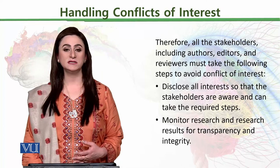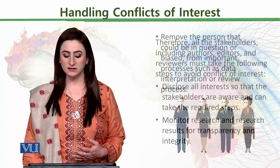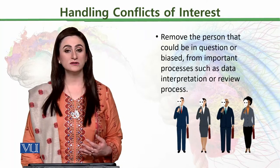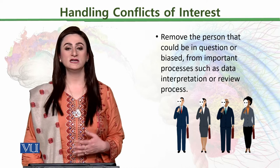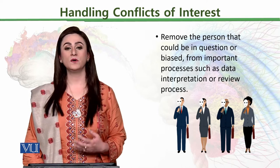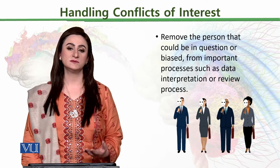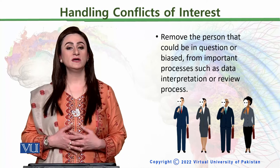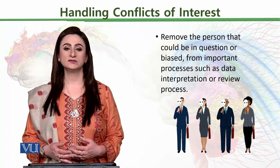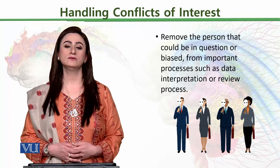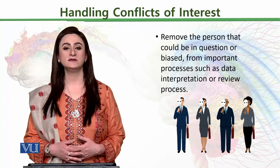Monitor research and research results for transparency and integrity, because the prime purpose of our research is to maintain its integrity and transparency. Remove the person that could be in question or biased from important processes such as data interpretation or review. Once a conflict of interest with a certain person has been identified, it is very important to set that person aside from the process so the research can be published transparently and in an ethical manner, as it has been conducted.